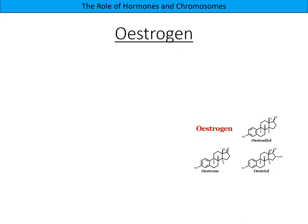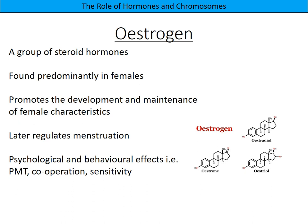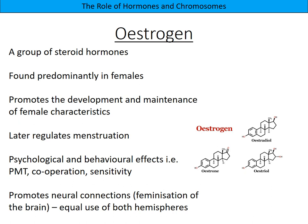Oestrogen is the female hormone and it's actually a group of steroid hormones - you can see three different types bottom right, with oestrogen as the umbrella term for those. Found predominantly in females, it promotes the development and maintenance of female characteristics. Later in life oestrogen regulates menstruation - at different times of their cycle women will have more or less oestrogen, which affects them psychologically and behaviourally. This includes PMT, premenstrual tension, as well as cooperation and sensitivity.